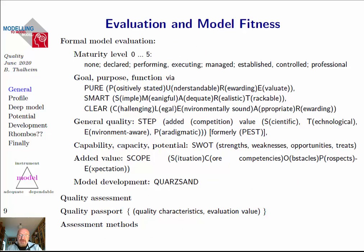Before going to a systematic treatment, we should have some way to characterize the maturity of a model. We use here the SPICE framework with six maturity levels: known/declared, performing/executing, managed, established, controlled, and professional. We might use other maturity frameworks as well. We have different properties and should have quality assessment methods. Finally, we can derive a quality passport for a model that has quality characteristics, with some kind of evaluation value using this maturity level framework.